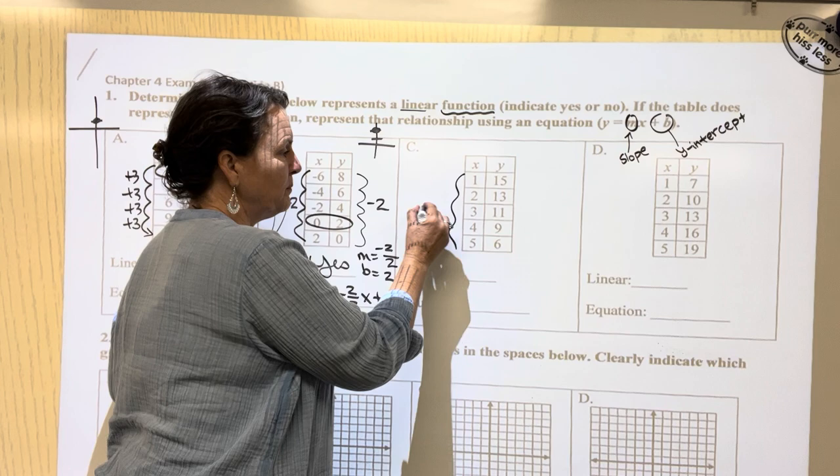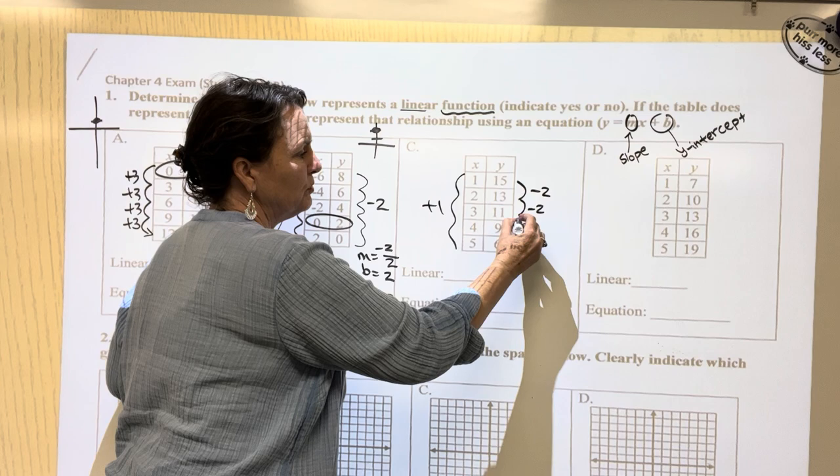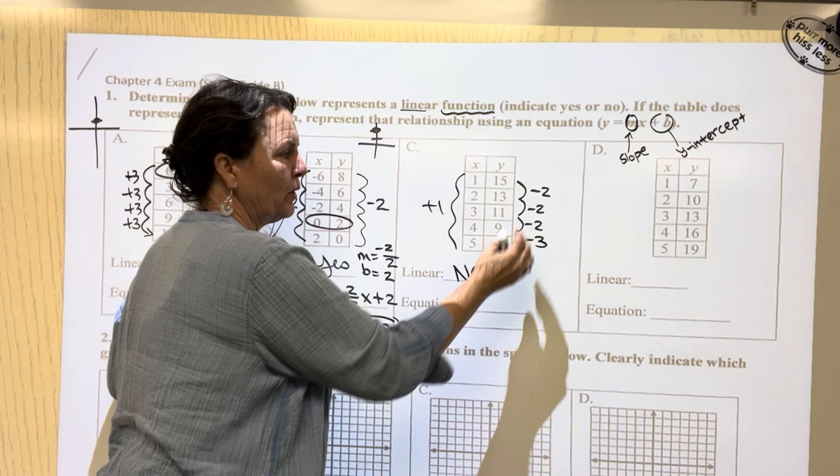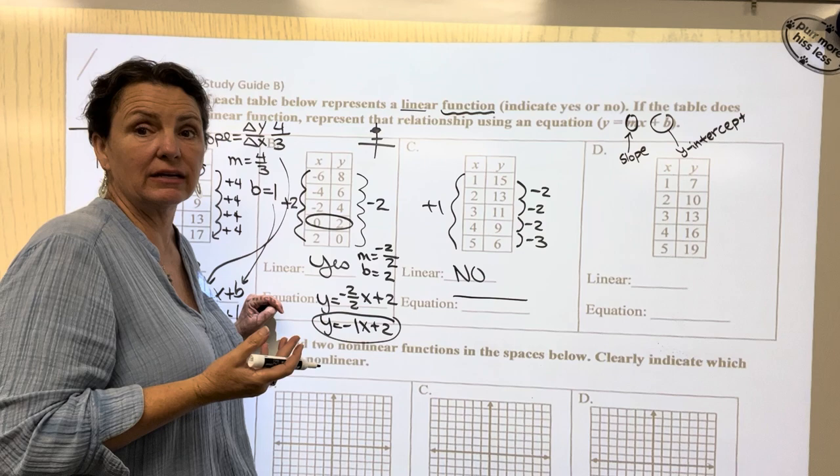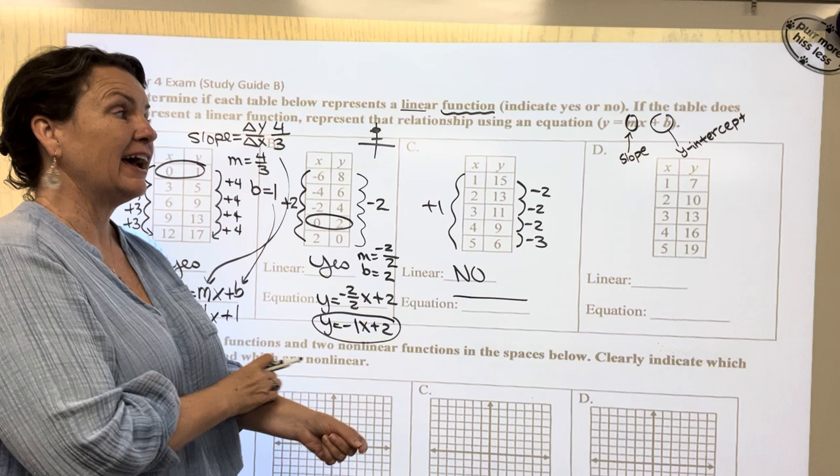Let's try the next one. We have down two, down two, down two, down three. Nope. We don't have a constant rate of change on that side. So we're not sure what type of function it is. So we don't know what function to create. So we just know it's not a linear function.